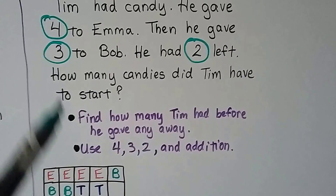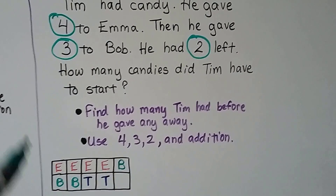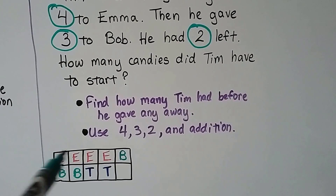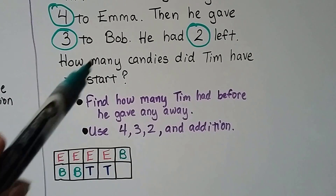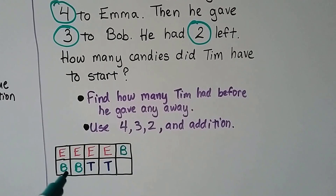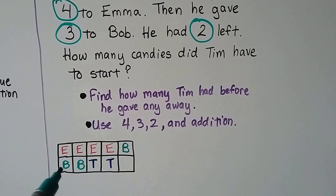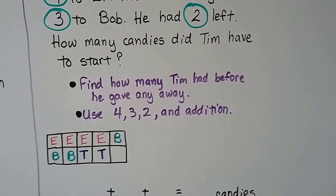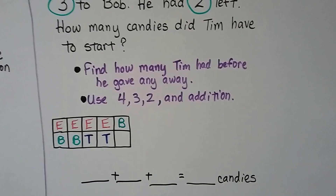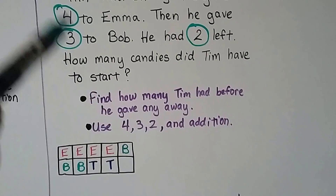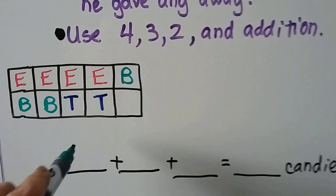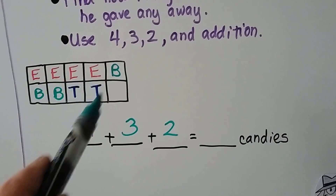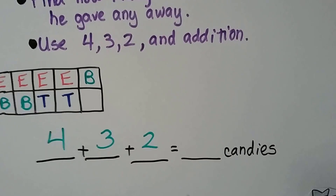What we can do is make a ten frame. He gave four to Emma — Emma starts with an E, so we can make four E's for her four. He gave three to Bob — we can make three B's for Bob. And he had two left, and his name is Tim, so we put two T's for Tim. We can look at the ten frame and see that it's one less than ten — it's nine. Using four, three, and two to write an addition sentence, we can see from our picture that he had nine candies to start.